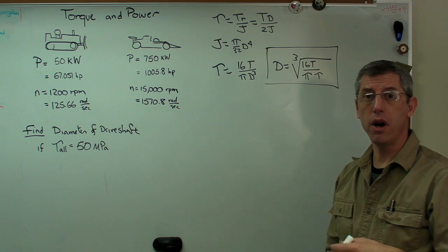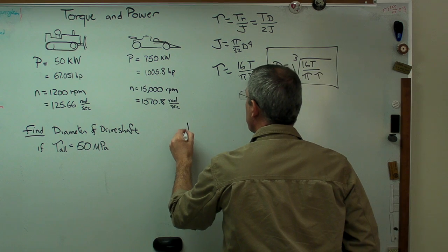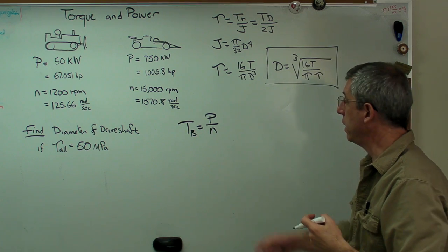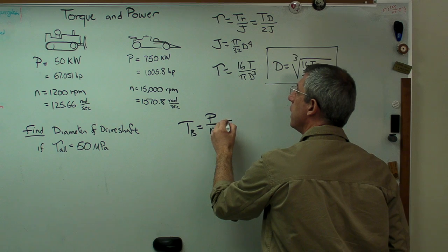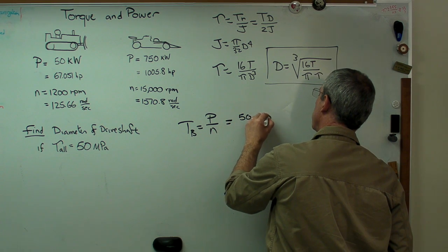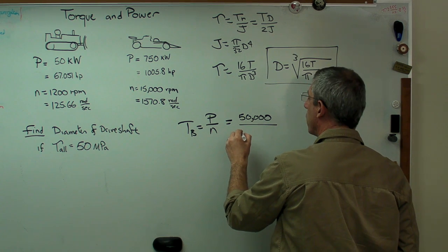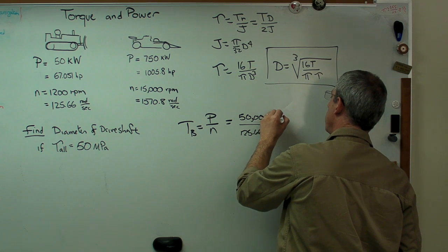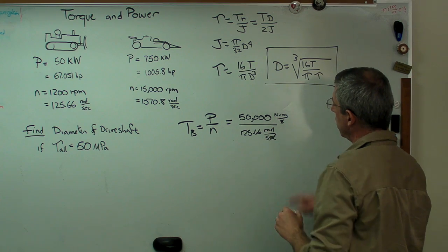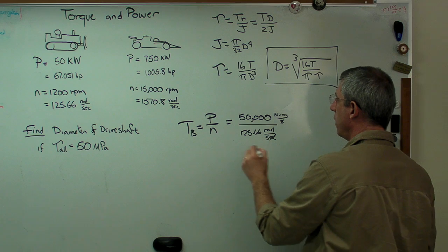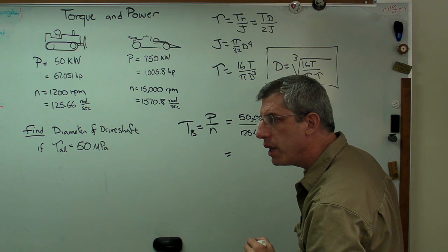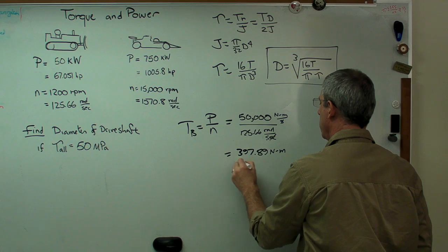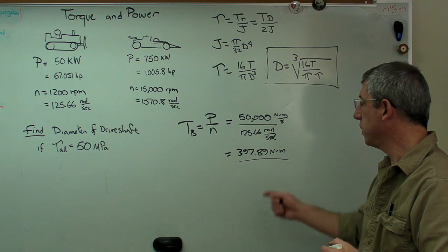First thing we need to know about both engines is the torque produced by both of them. For the bulldozer, torque equals power over rotational speed. This is 50,000 watts over 125.66 radians per second. That's going to cancel out, so we get newton meters, exactly what we want. That turns out to be 397.89 newton meters. This is a little more than you'd find in a large passenger car, really not that much.